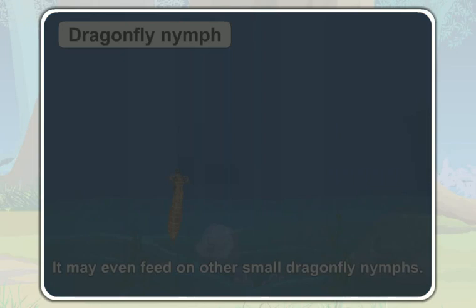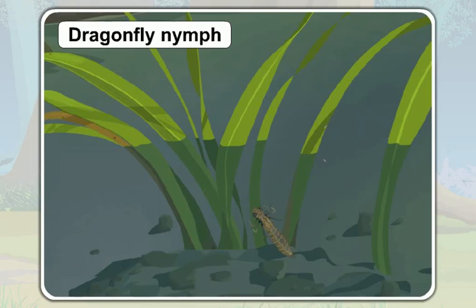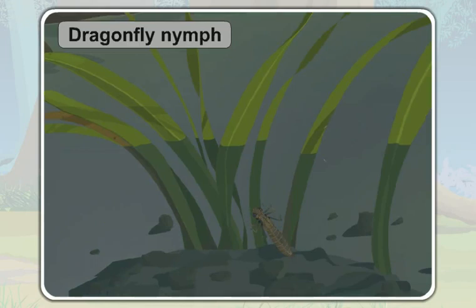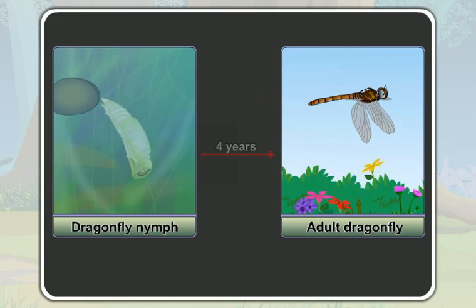A nymph moulds many times to grow into an adult. Now take a look at this nymph — it is about to become an adult dragonfly. Usually, in about three to six weeks, a cockroach nymph grows into an adult cockroach. But a dragonfly nymph takes up to four years to grow into an adult dragonfly.